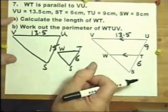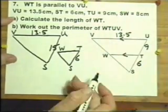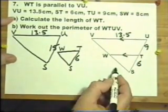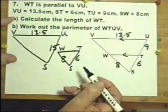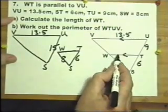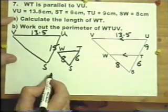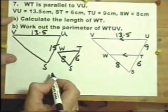So that's why I think this diagram is safer. You can use that one but be careful. SW is 8, well that's okay on either diagram, 8. Calculate the length of WT. WT, now you can do this as I say with an enlargement and a scale factor.